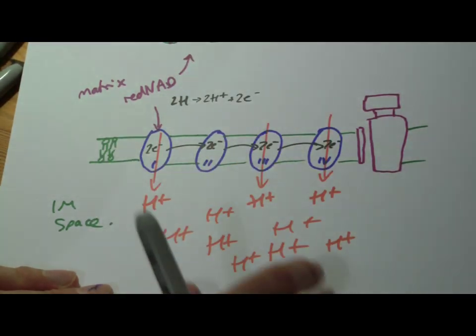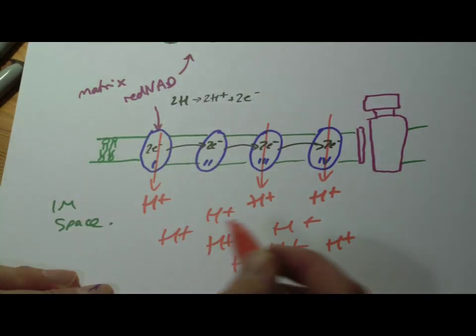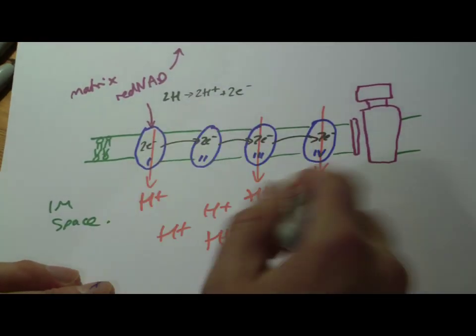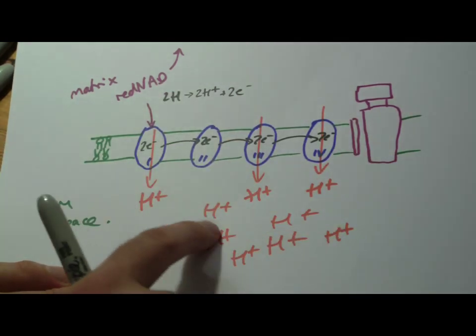So by diffusion, we would expect the hydrogens to move that way back through. It's also building up an electrochemical, sorry, electrical potential. There's a lot of charged particles here.